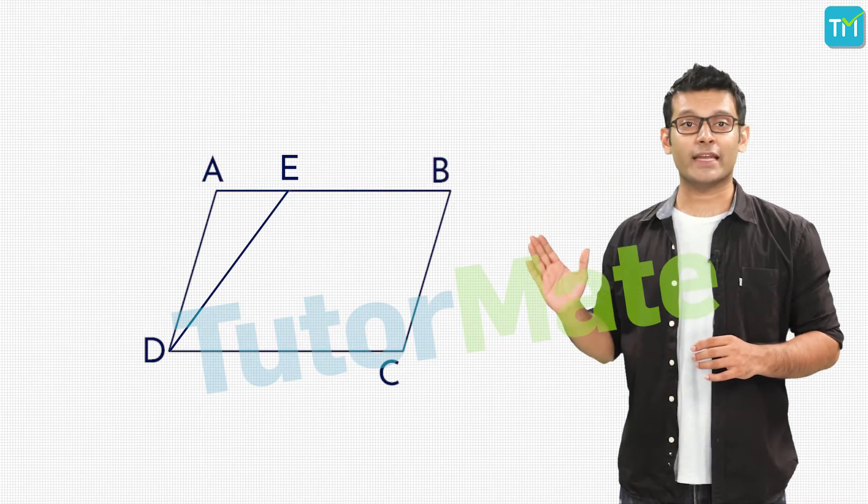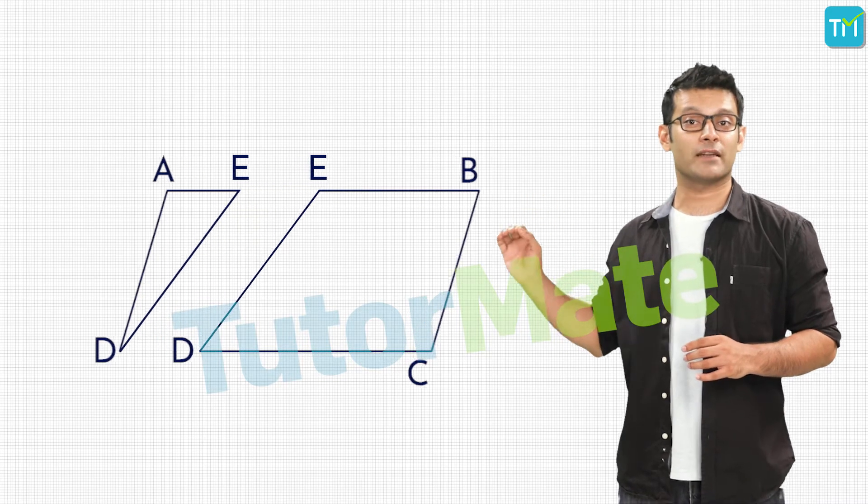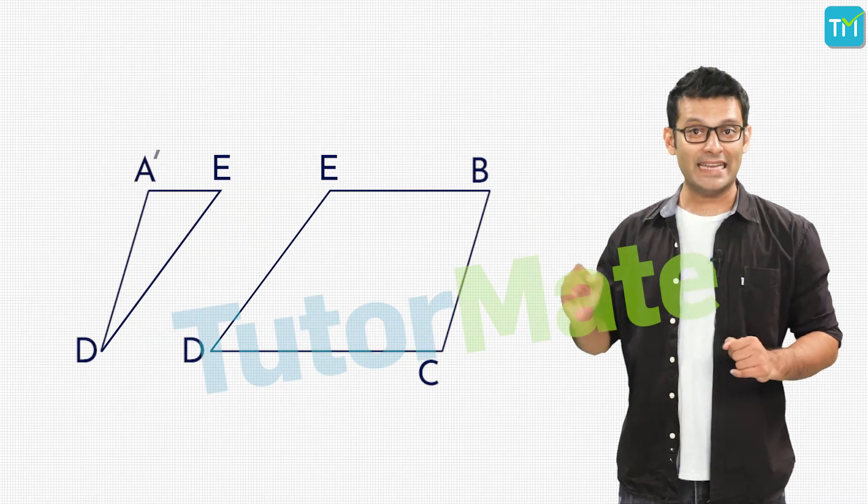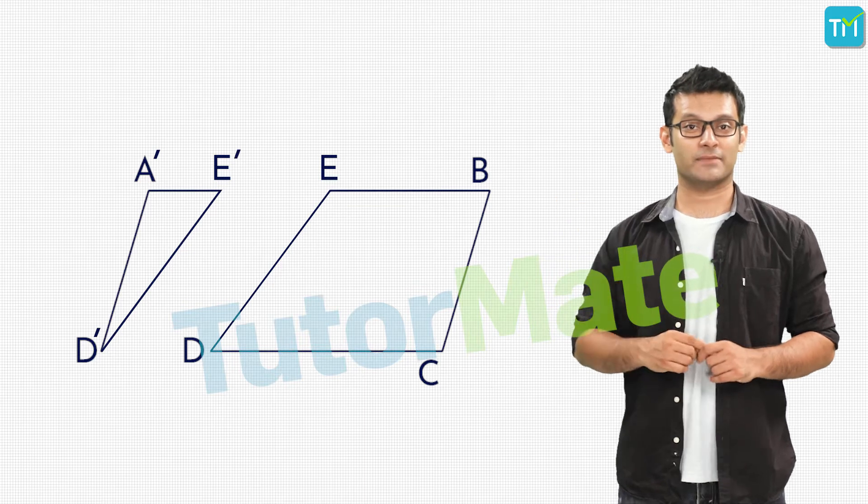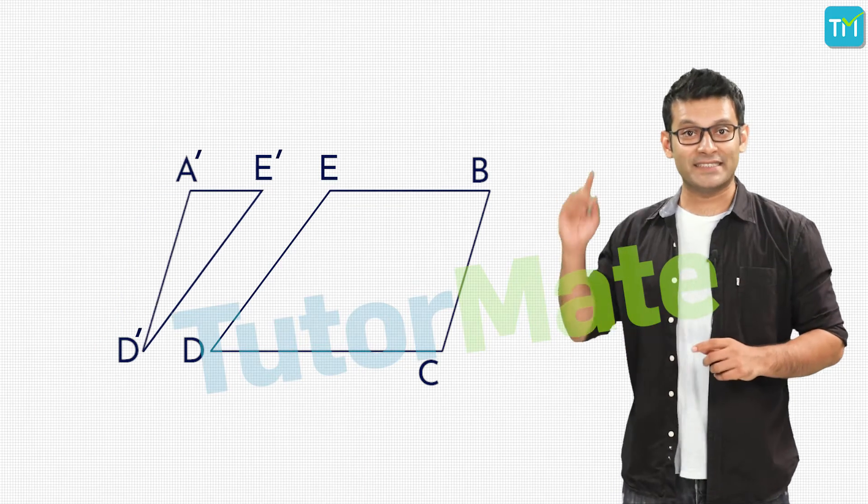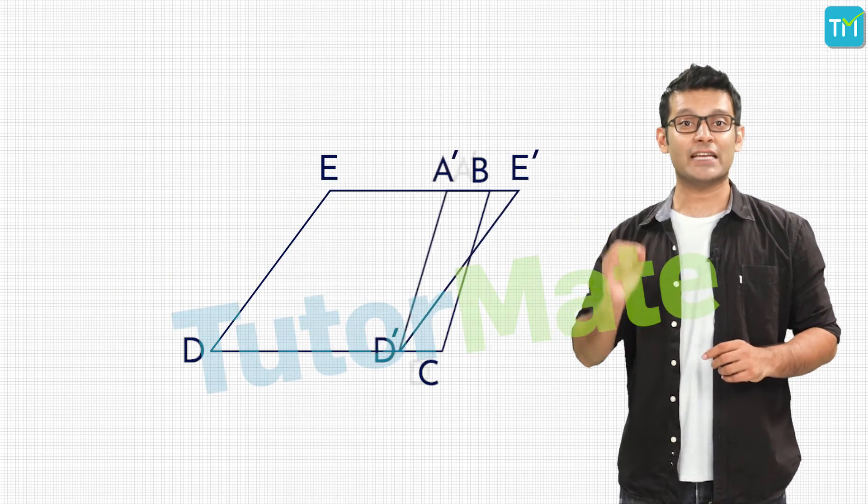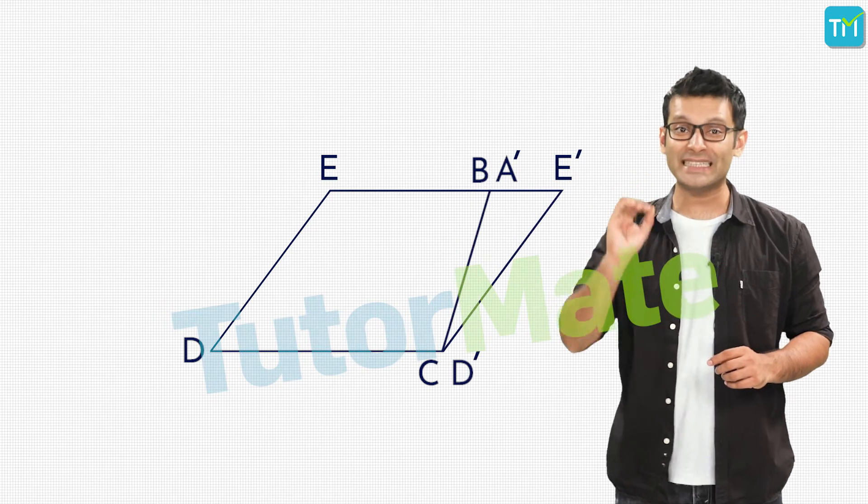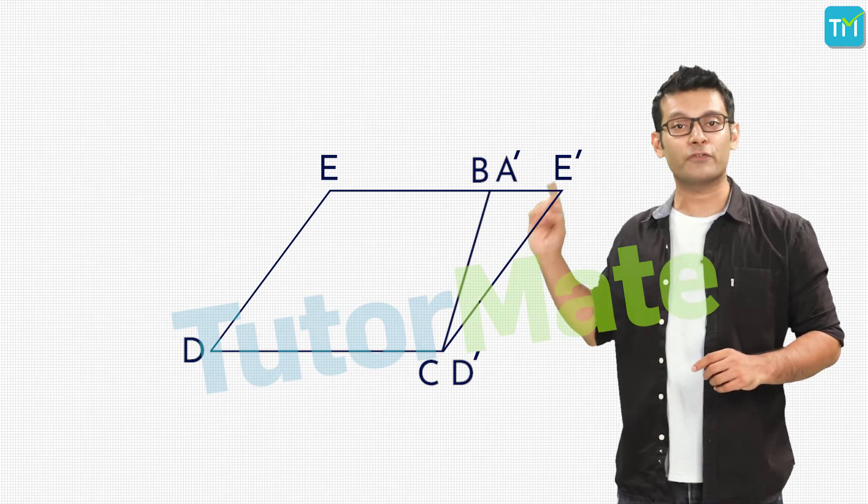Next, we'll cut out the triangle ADE from this parallelogram. Finally, we'll place this triangle such that A dash D dash coincides completely with the side BC of the parallelogram.